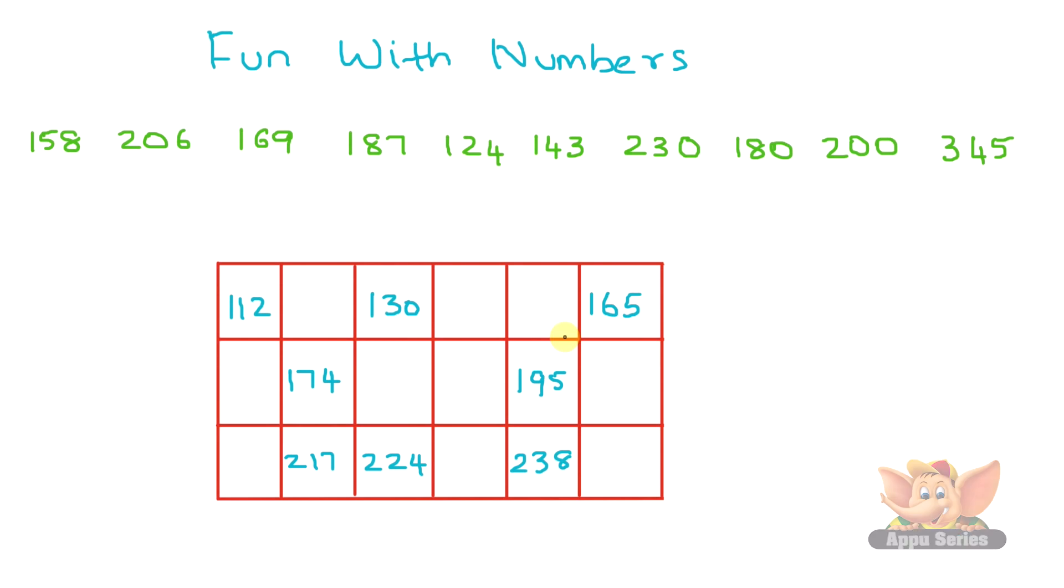Now, let's try something else. I have a grid of numbers with a few blank spaces in them. Let's fill the grid with the numbers that we see over here. The numbers are 158, 206, 169, 187, 124, 143, 230, 180, 200, and 345.